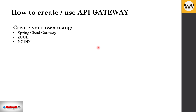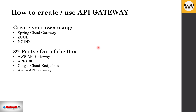To implement an API gateway, you can create your own using Spring Cloud Gateway if you're using Spring — it's mostly a configuration exercise for routing. You can also use Zuul or Nginx, or use out-of-the-box third-party implementations like AWS API Gateway, Google Cloud, or Azure — each cloud provider has their own API gateway. That covers API gateways; in the next video we'll talk about microservice service discovery. Do like, share, and subscribe to the channel. Happy learning, bye!